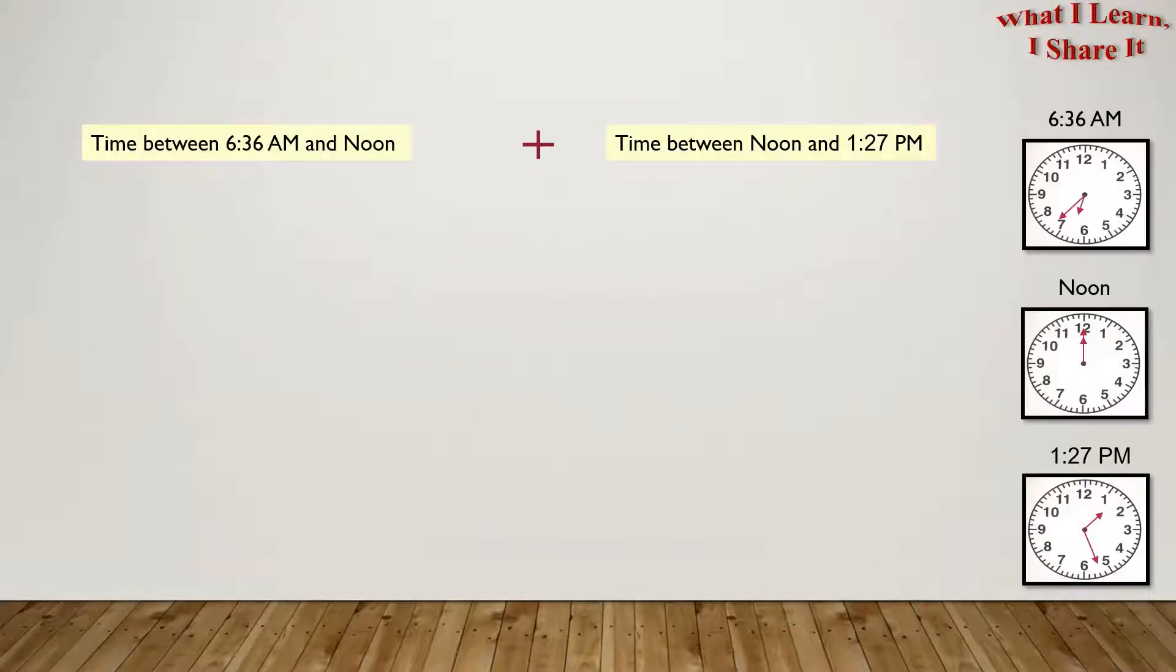So we can solve this problem in parts. In part 1, we can find the duration between 6:36 a.m. and noon. In part 2, we can find duration between noon and 1:27 p.m. Then we can add these two durations to get the total time duration.